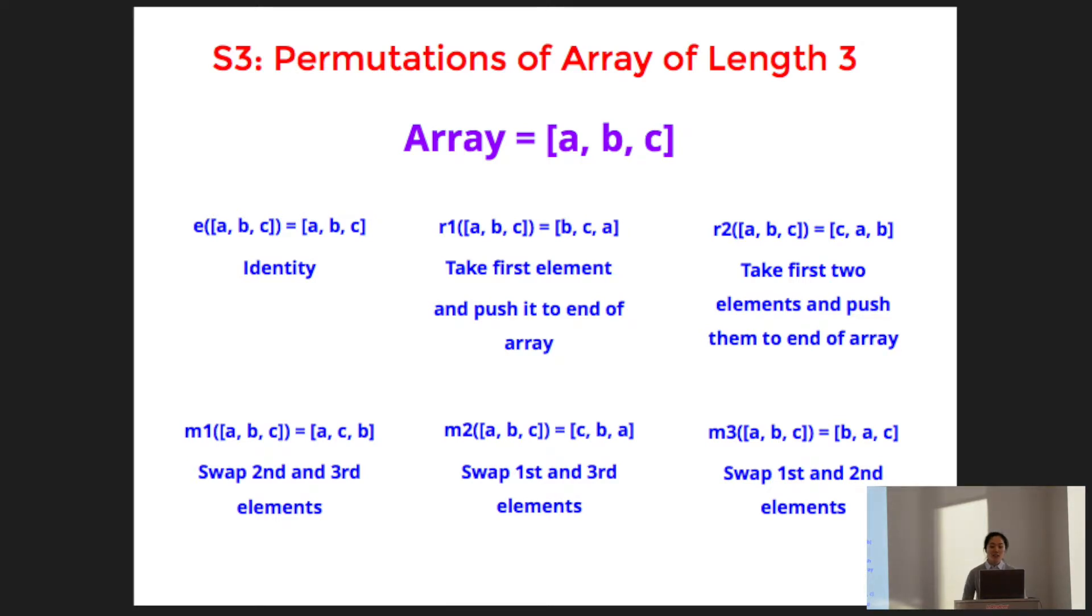We have r1, which is going to take the first element and push it to the end of the array. We have r2, which takes the first two elements and pushes them to the end of the array. We've got m1, which will fix the first element but swap the second and third elements. M2 will fix the second element but swap the first and third elements. And m3 will fix the third element but swap the first and second elements.